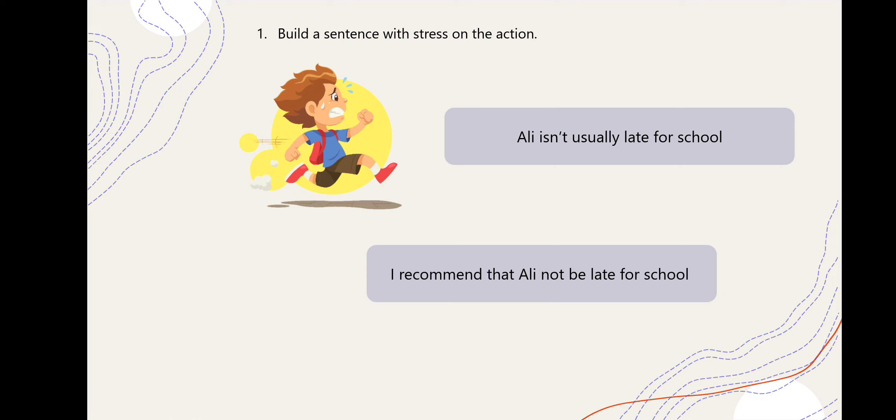'Ali is not usually late for school.' - علي دائماً ما يتأخر على المدرسة. 'I recommended that Ali not be late for school.' لاحظي إن الجملة الأساسية منفية، فيها 'is not'. بعد 'I recommended that' ننزل السبجكت اللي هو علي، وبعدين 'is' نشيلها ونحط 'be'. عشان الجملة منفية نخليها 'not be'. 'I recommended that Ali not be late for school.'